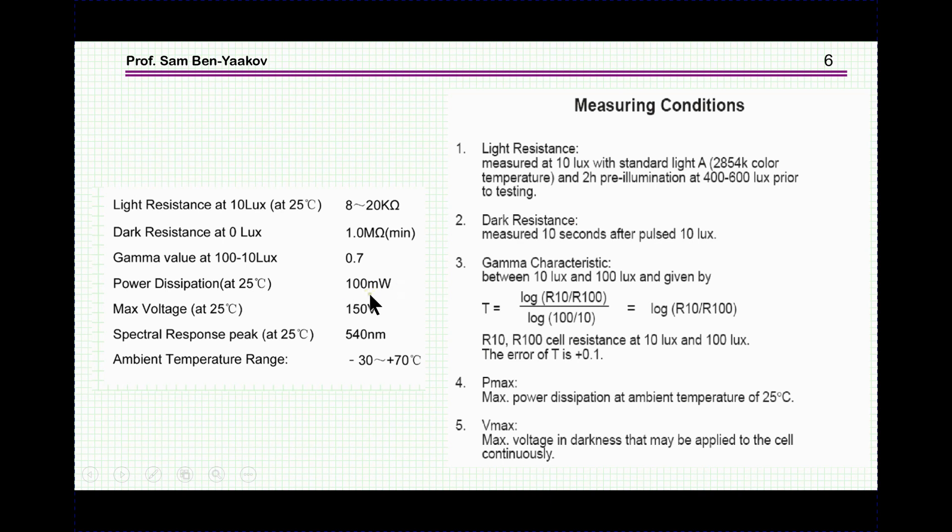There are units that would be even higher than that, like 200, 300 milliwatt. And then you have a maximum voltage, which is when it is in the off state, when the resistance is very high, this is the breakdown voltage. And the spectral response, the peak of the spectral response is at about 540, and this is within the visible light.